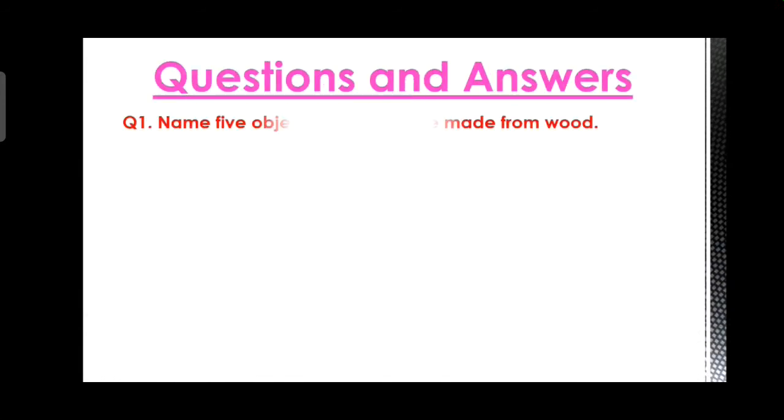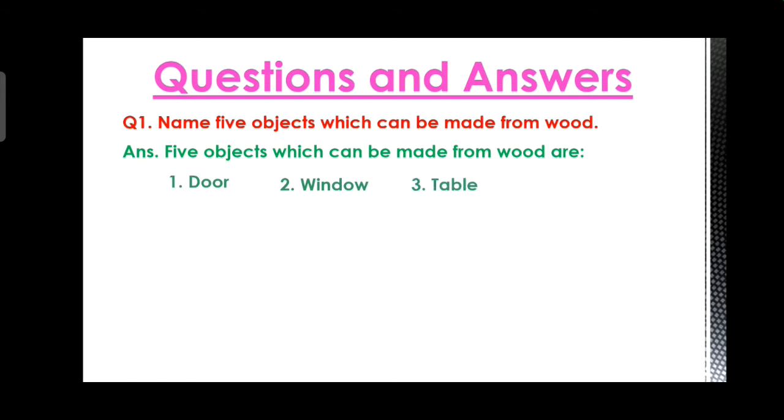Our first question is, name five objects which can be made from wood. Answer: five objects which can be made from wood are door, window, table, chair, and boat.